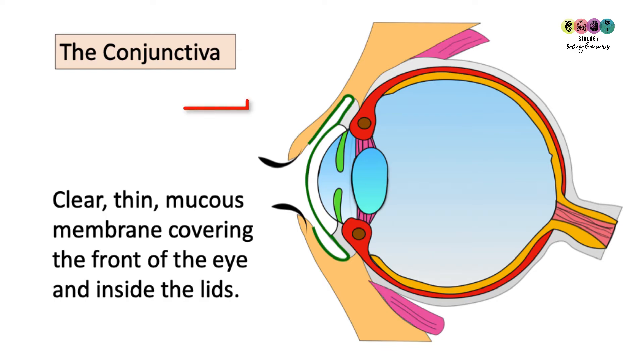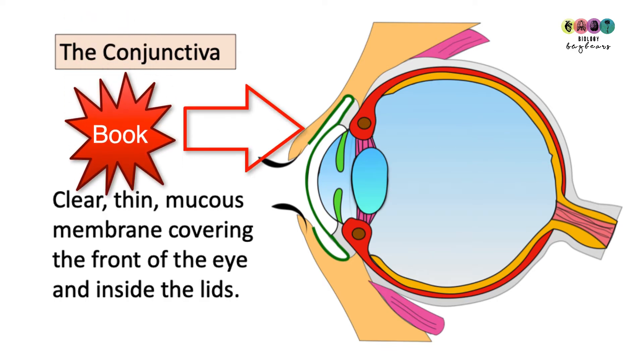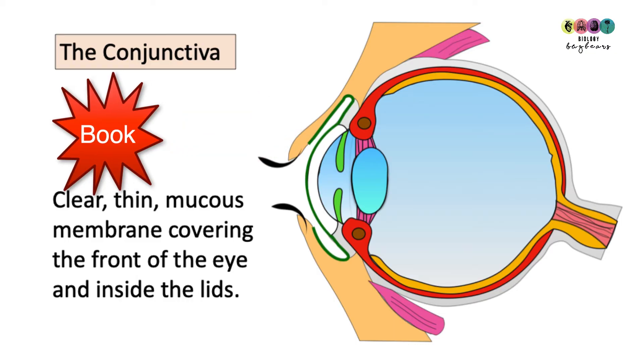In this diagram you can see that I've drawn in the eyelids and the eyelashes. You don't need to do that, you just need to be able to draw a very basic diagram of the eye and to label it.